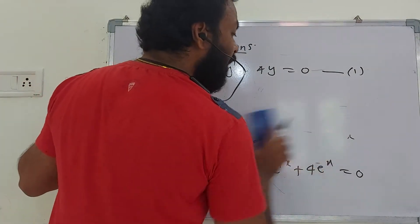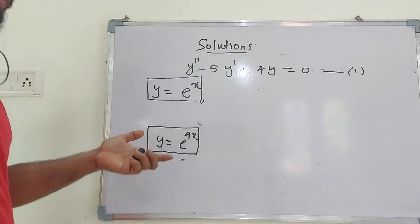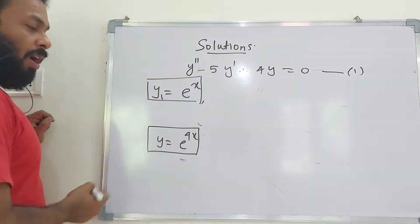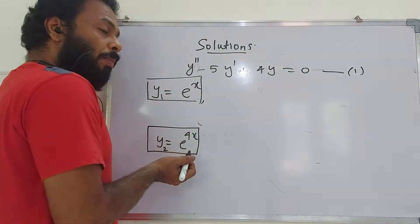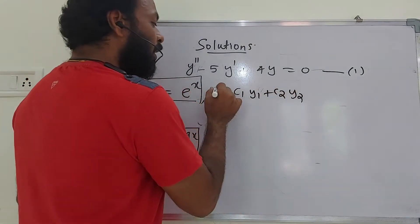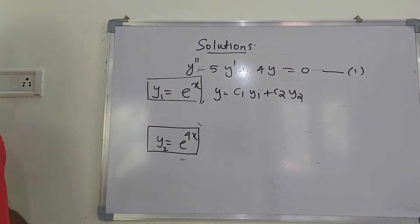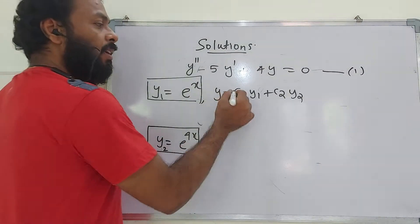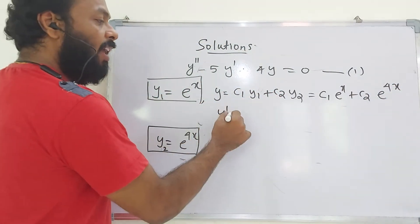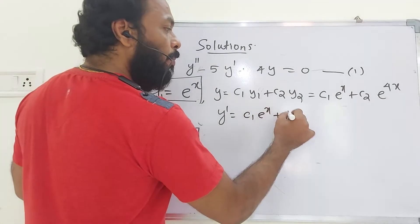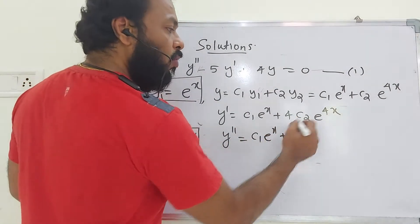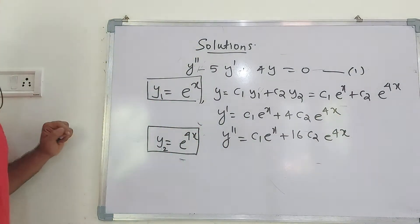A differential equation may have more than one solution. If y = e^x and y = e^(4x) are both solutions, denoted y1 and y2 respectively, then we can show that any linear combination c1·y1 + c2·y2 is also a solution. Let y = c1·e^x + c2·e^(4x).